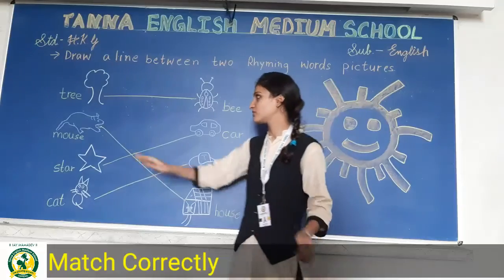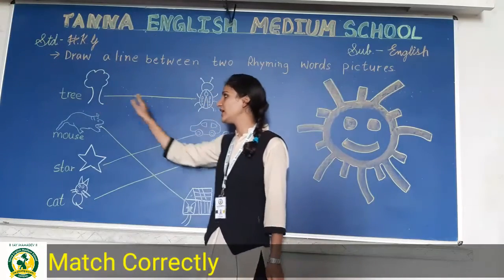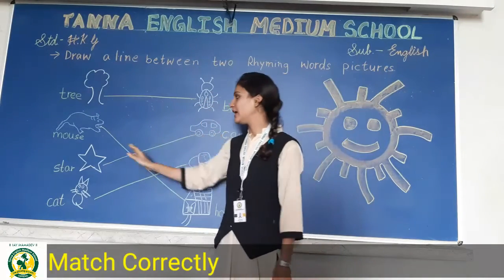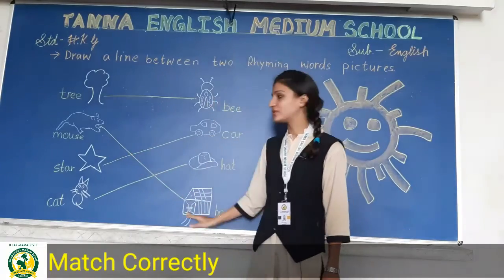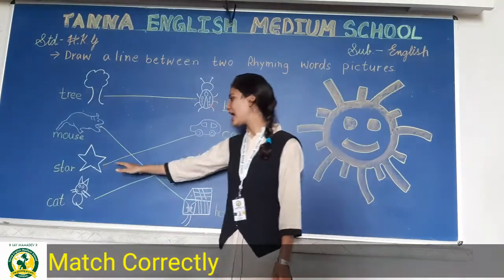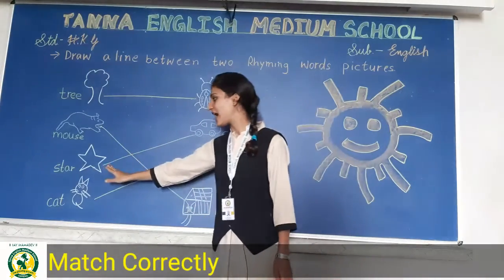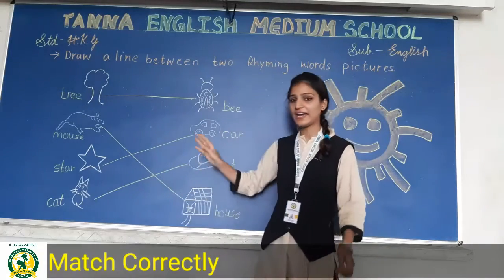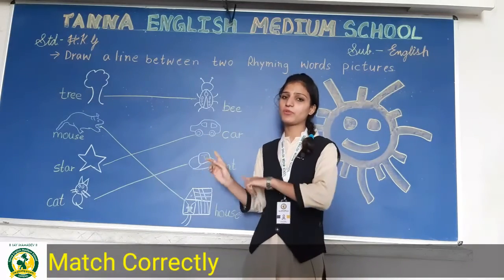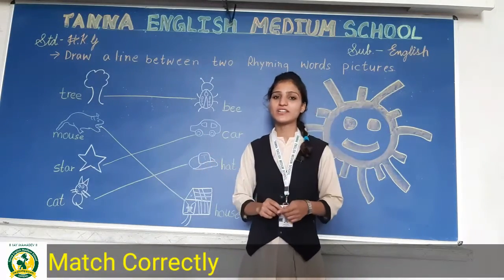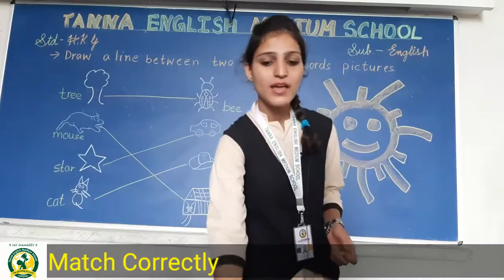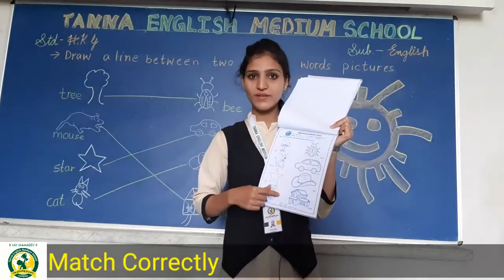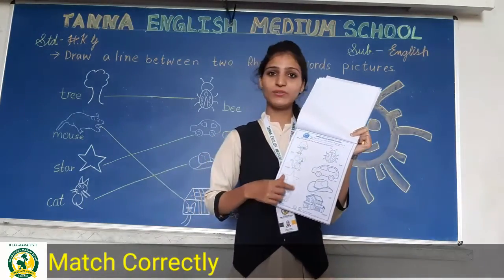Students, देखो — tree, bee. Mouse, house. Star, car. Cat, hat. जो same sound करते हैं आपको उसको match करना है. और अपनी worksheet में, students, page no. 9 आपको यह complete करना है. Thank you.